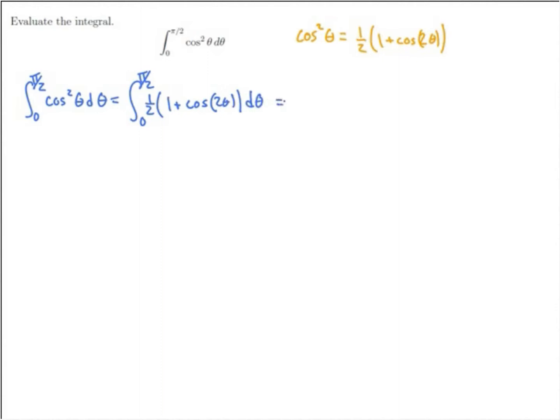Well this 1 half can come out, and I'm left with the definite integral from 0 to pi over 2 of 1 plus cosine of 2 theta.